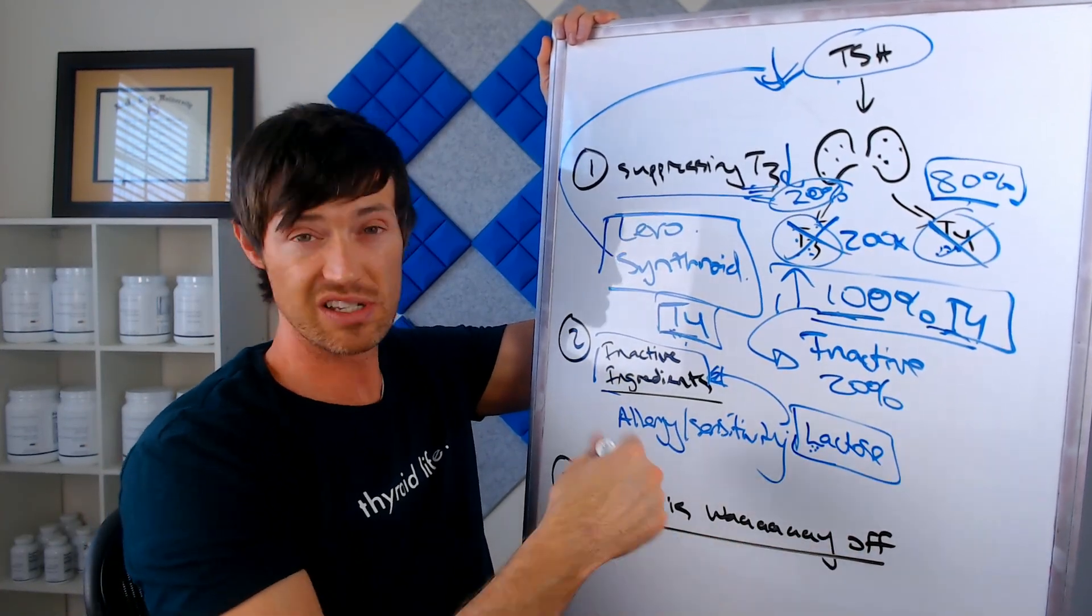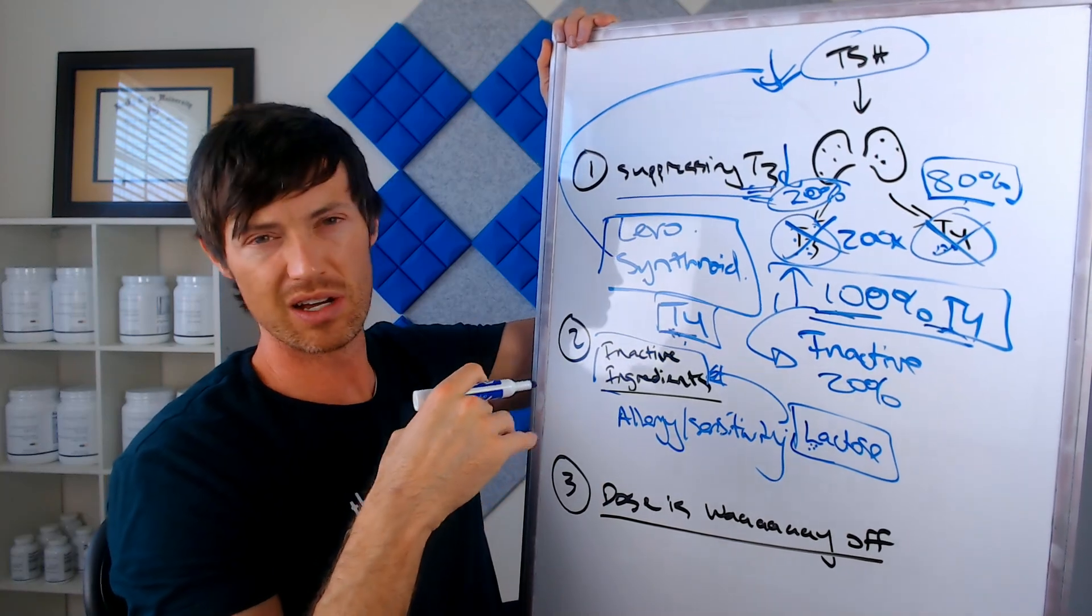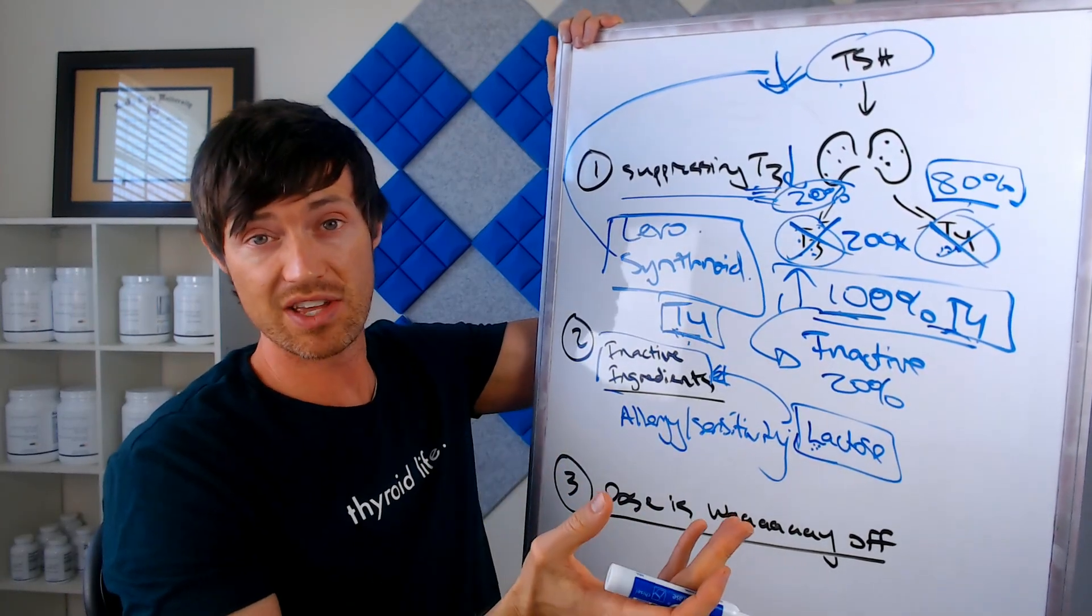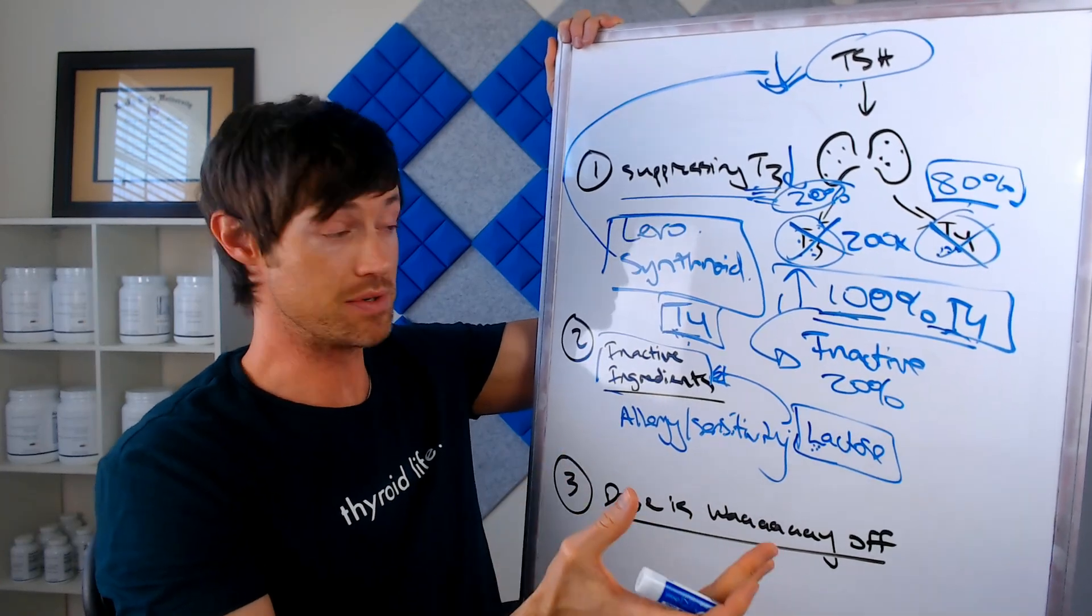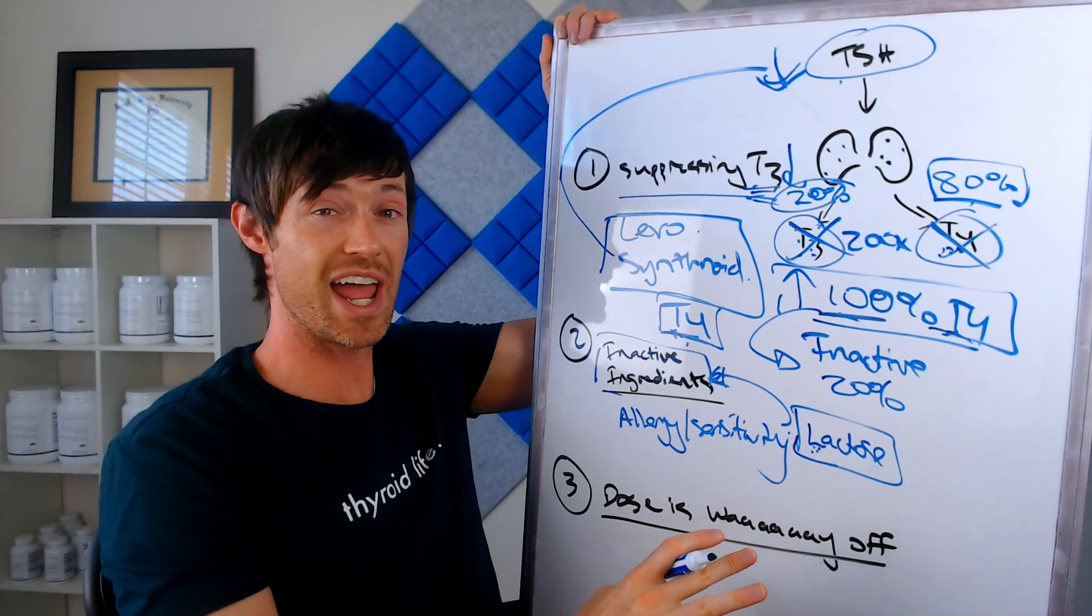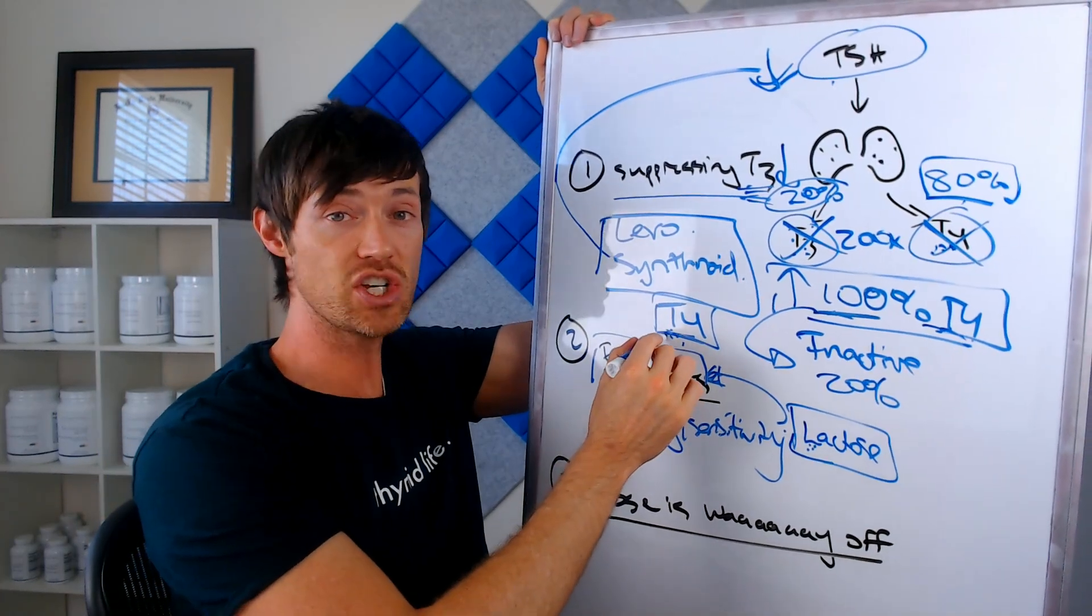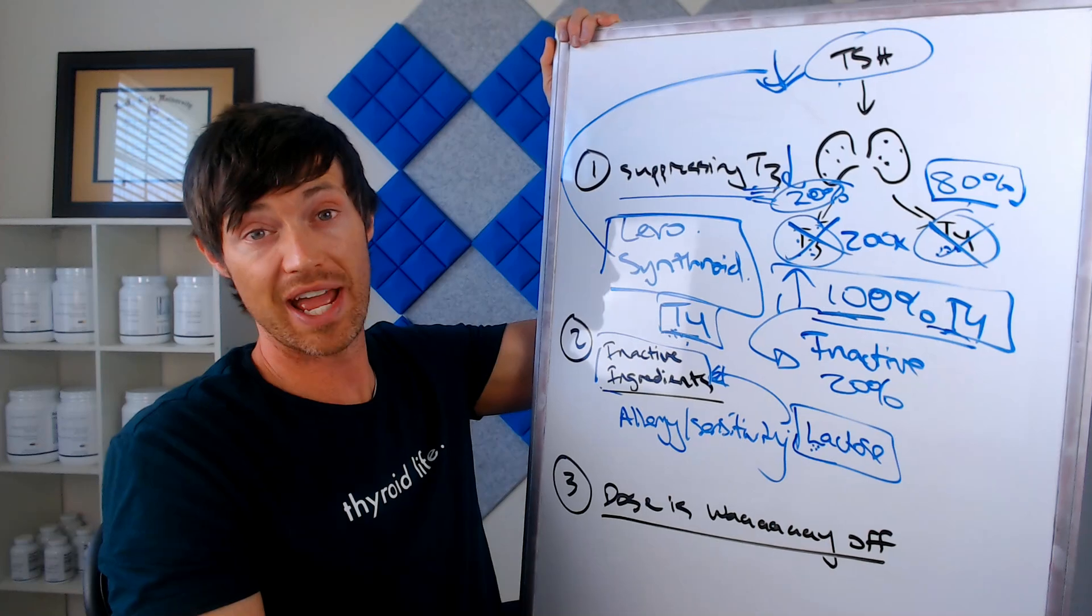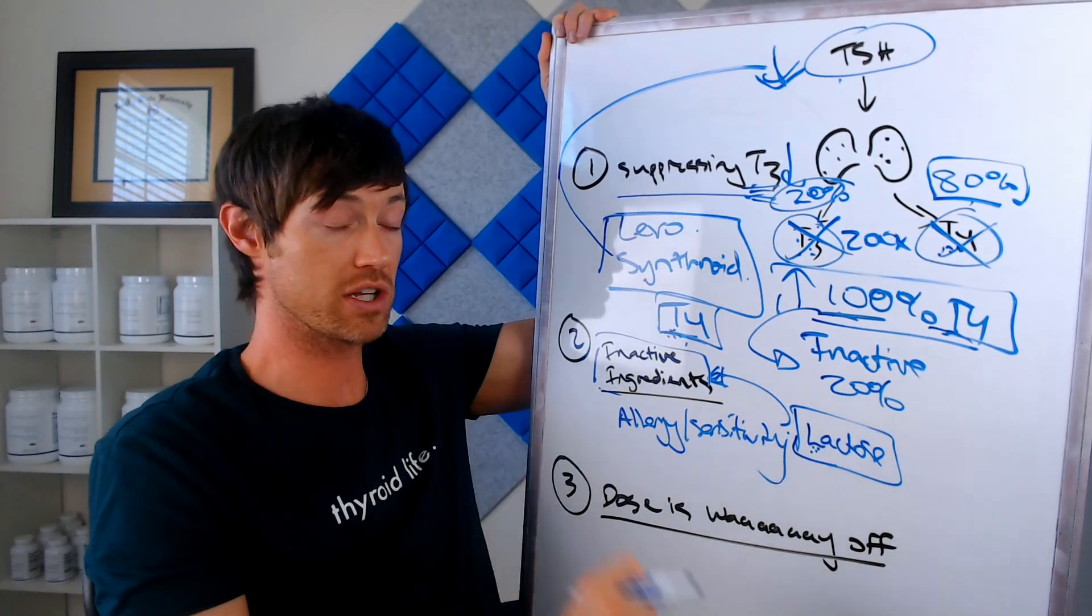Now there are lots of other inactive ingredients, including cellulose and some other fillers and binders and things like that, including dyes, by the way. So if you're somebody that has an allergy or doesn't respond well to certain types of dyes, this may also be part of the problem. I didn't include all of these in here, but I want you to understand that even though it may have the medication you need, the active ingredient, the inactive ingredient might be causing you to react negatively as well. So you want to pay very close attention to that.